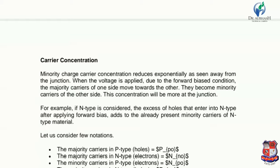In forward bias, the majority charge carriers move forward, while minority charge carriers tend to move away from the junction — so minority charge carrier concentration is lower compared to majority charge carriers. For N-type material, there is an excess of holes that enter into the N-type after applying forward bias, in addition to the already present minority carriers of the N-type material. In P-type, the majority charge carriers are holes and minority carriers are electrons; in N-type, the majority charge carriers are electrons and minority carriers are holes.